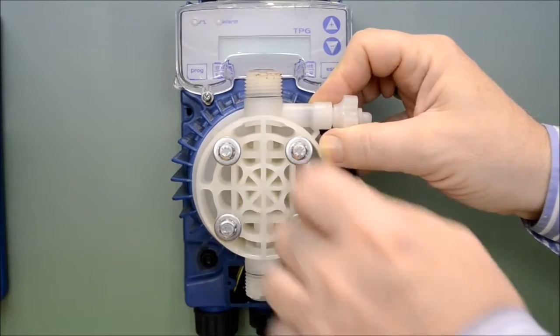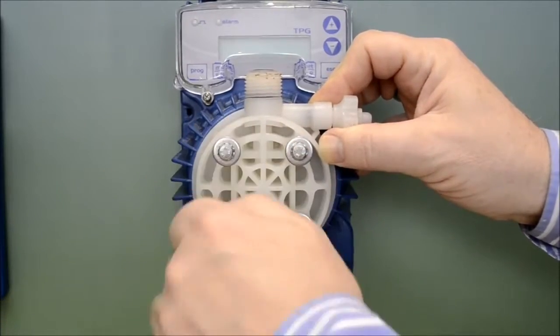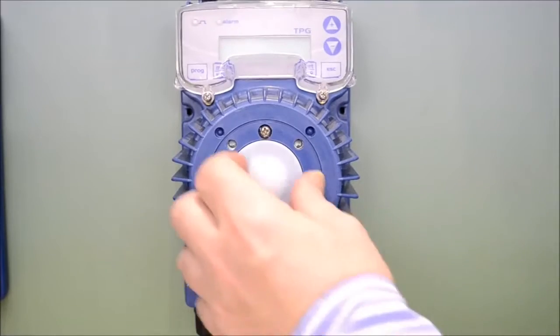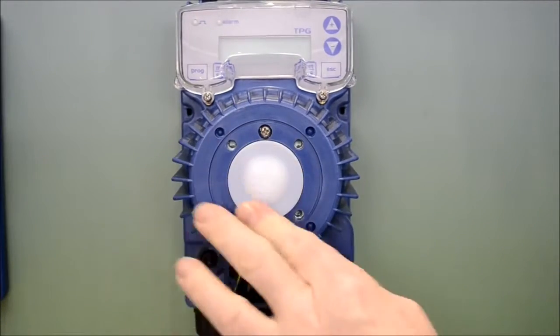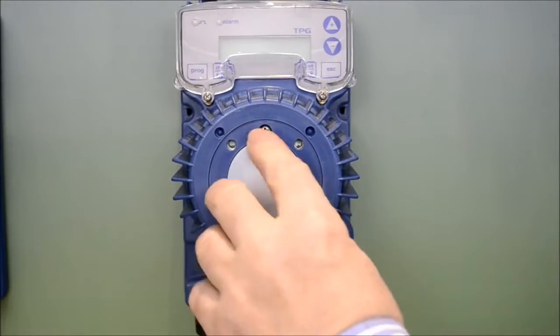Once the four fixing bolts have been released the pump head can be easily removed. The diaphragm can be removed simply by turning anti-clockwise and unscrewing from the solenoid.